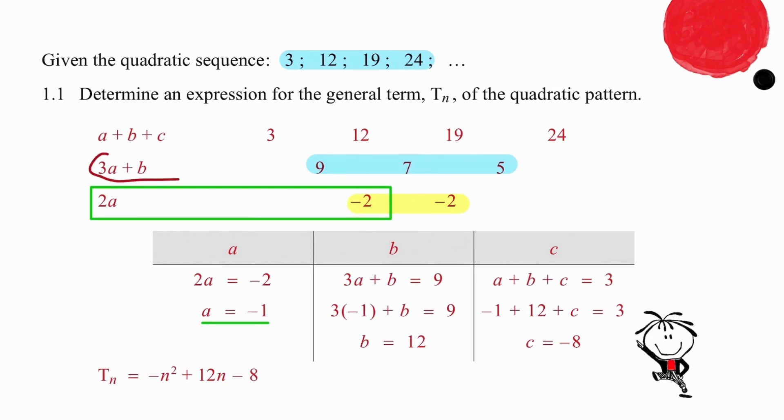Now we're going to equate 3a plus b with the first first difference and that will give us an equation that we can set up again. Using the a value of minus 1 we can work out that b is equal to 12.